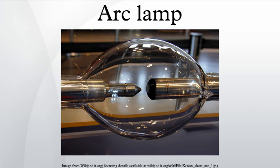In popular use, the term arc lamp means carbon arc lamp only. In a carbon arc lamp, the electrodes are carbon rods in free air. To ignite the lamp, the rods are touched together, allowing a relatively low voltage to strike the arc. The rods are then slowly drawn apart, and electric current heats and maintains an arc across the gap. The tips of the carbon rods are heated and the carbon vaporizes. The carbon vapor in the arc is highly luminous, which is what produces the bright light. The rods are slowly burnt away in use, and the distance between them needs to be regularly adjusted in order to maintain the arc.